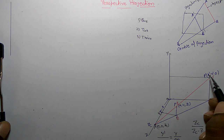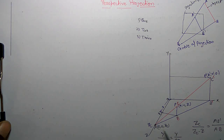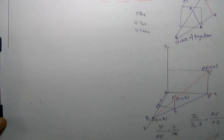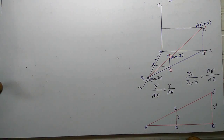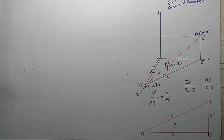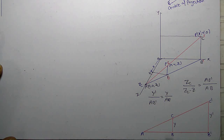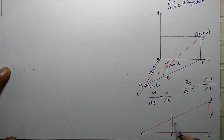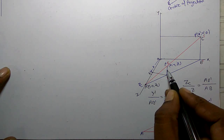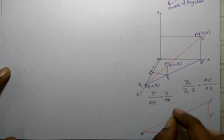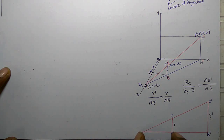I am going to find x-dash and y-dash. From triangle A, B-dash, C-dash and triangle A, B, C, the y-axis value is y here and y-dash there. From the triangle similarity rule: y-dash divided by A B-dash equals y divided by A B.